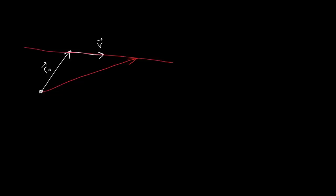In summary, given a point r0 and a vector v, we can write down the equation for this line as r as a function of lambda equals r0 plus lambda v. There are other equivalent ways of writing the equation of a line.